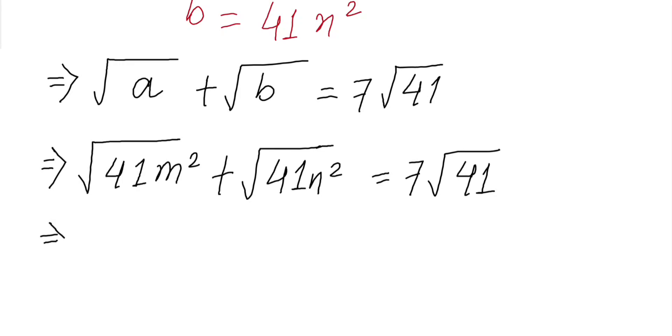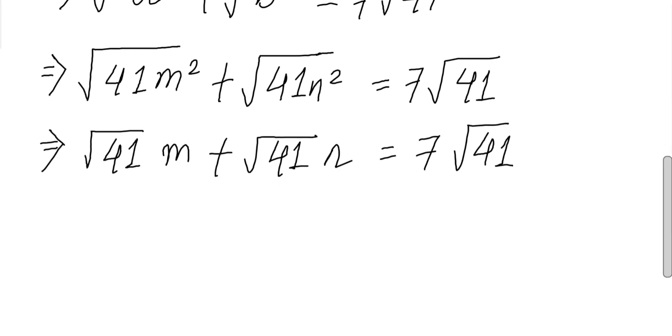If you know the basic rules of square root, you can see that this equals 41m and this equals 41n, and this side we have 7 square root of 41. Now as we have 41 as common, we can cancel both sides, and this question is reduced to m plus n equals 7.